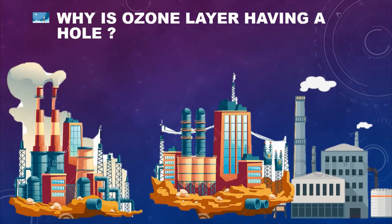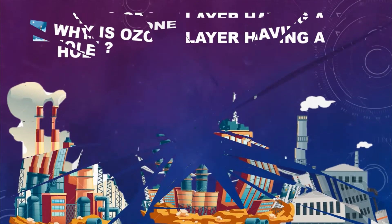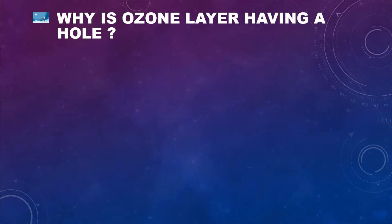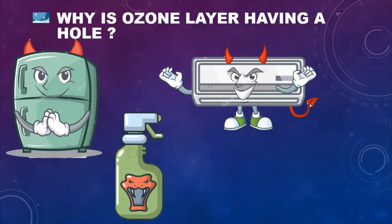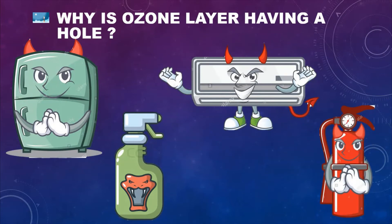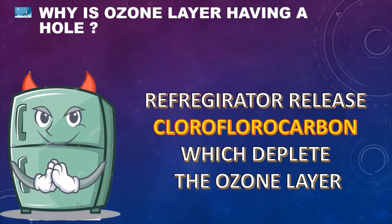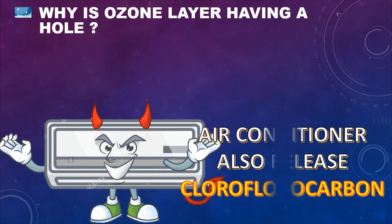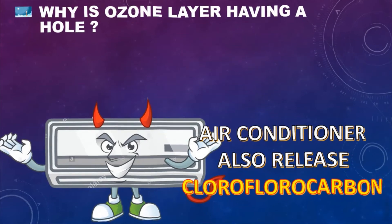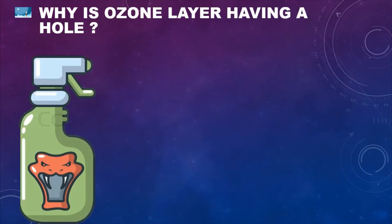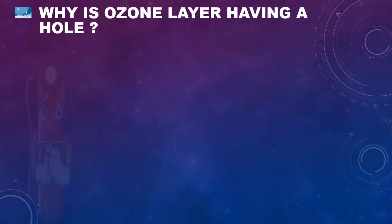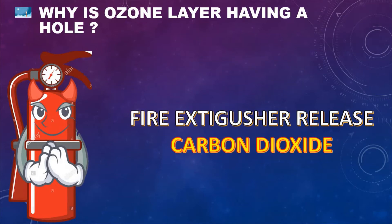Why is the ozone layer having a hole? The smoke from factories is causing the ozone layer to have a hole. But things we use in our daily lives — like refrigerators, pesticides, air conditioners, and fire extinguishers — also release gases that deplete the ozone layer. Refrigerators and air conditioners release chlorofluorocarbons, pesticides release nitrogen oxide, and fire extinguishers release carbon dioxide.